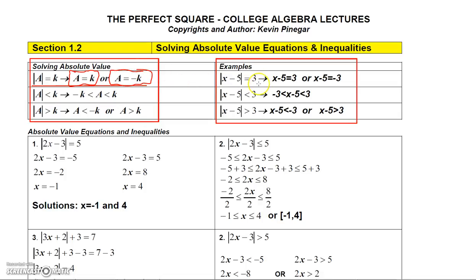Let's look at an example. Here I have the absolute value of the expression X minus 5 equal to 3. In order to solve this we have to solve two equations: we have to find what makes X minus 5 equal 3, and we must also find what makes X minus 5 equal negative 3.